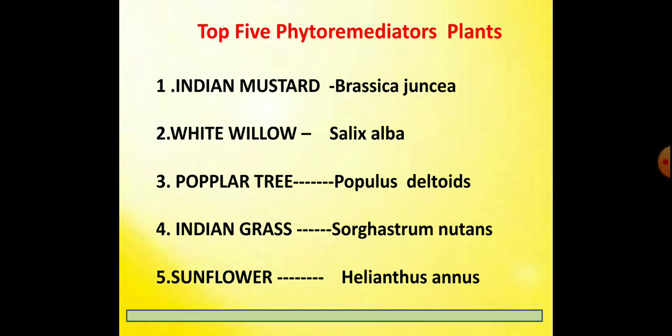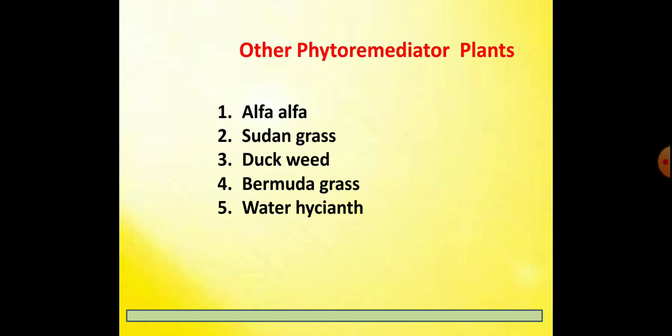Naturally, some plants have the capacity to remove contaminants. The top five phytoremediator plants are well known. Other phytoremediator plants include alfalfa, sudangrass, duckweed, bermuda grass, and water hyacinth.